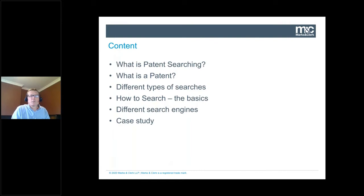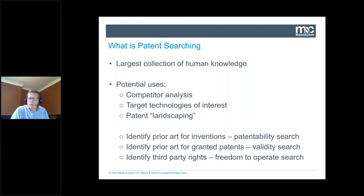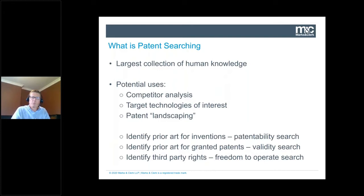So what is patent searching? The patent database is the largest collection of human knowledge. There are over 120 million published patent applications covering a whole range of technology going back to something like 1836. That's a fantastic resource to have — but how do you find that needle in that haystack? There's so much information out there that if you don't know what you're doing, it's going to be a fruitless task. You're going to spend a lot of time and effort finding something to no avail. So today we'll show you tools, tips and tricks to get into that corpus of documents and find a way forward in an efficient and timely manner.